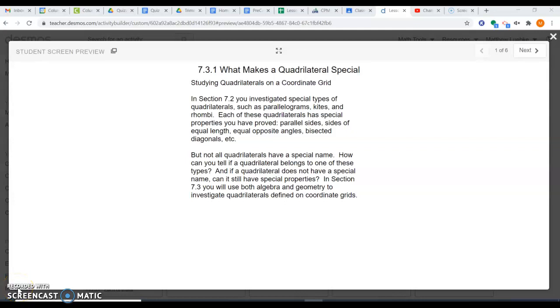Here's a video guide through lesson 7.3.1 talking about what makes quadrilaterals special and we're really studying quadrilaterals on a grid. We spent the whole 7.2 talking about what makes quadrilaterals special and proving special things such as the opposite sides of a rhombus are parallel or the opposite sides of a rectangle are congruent.